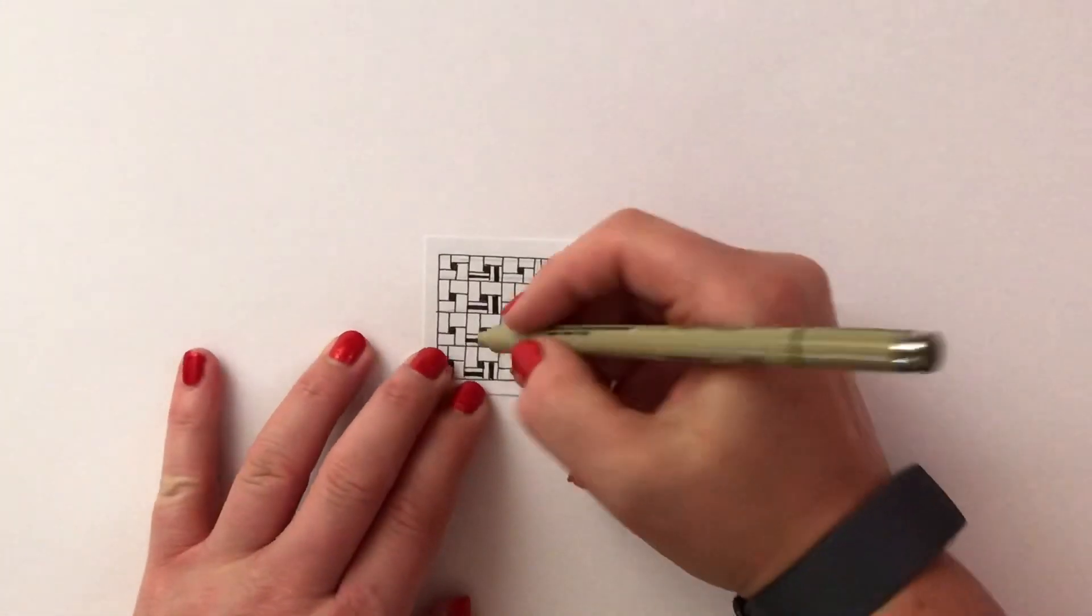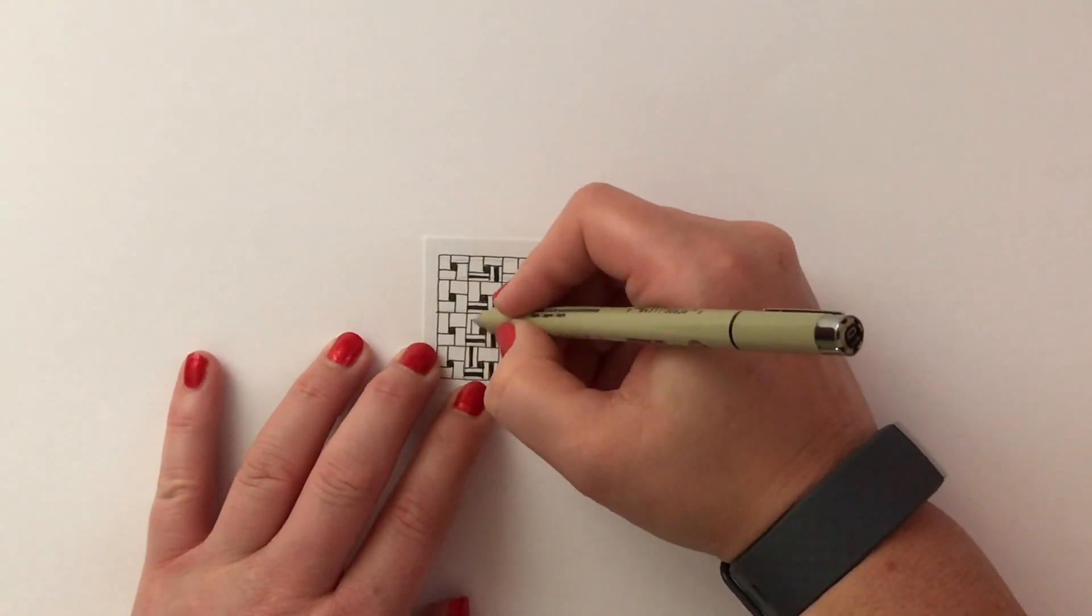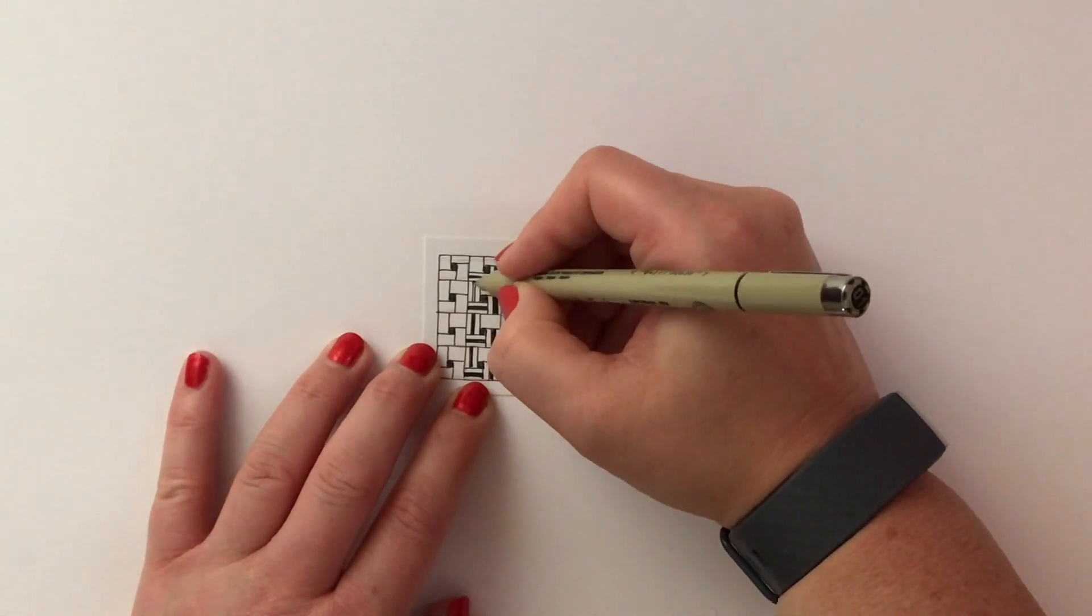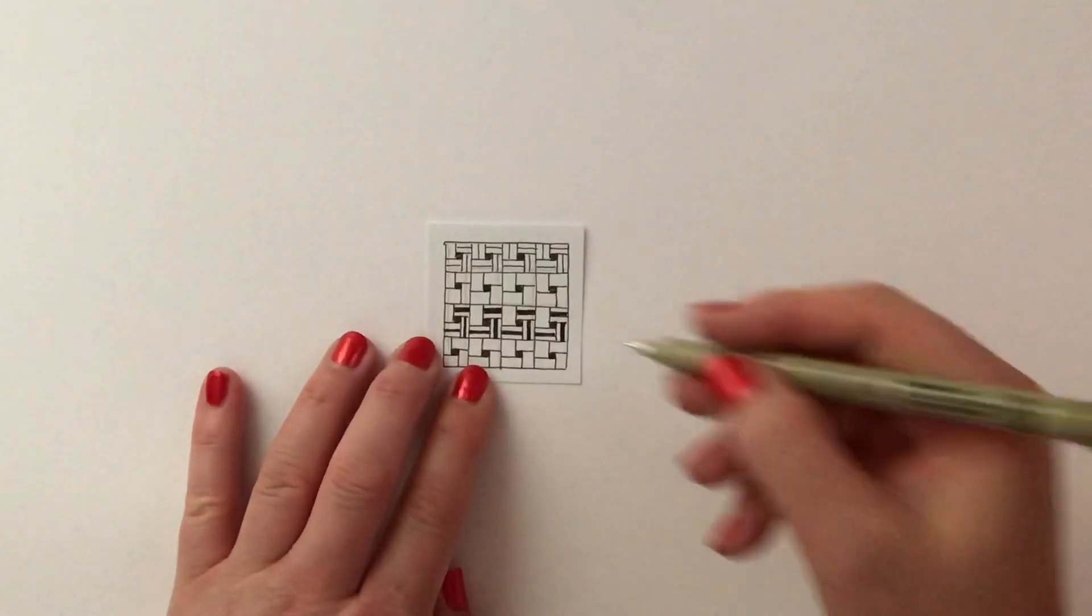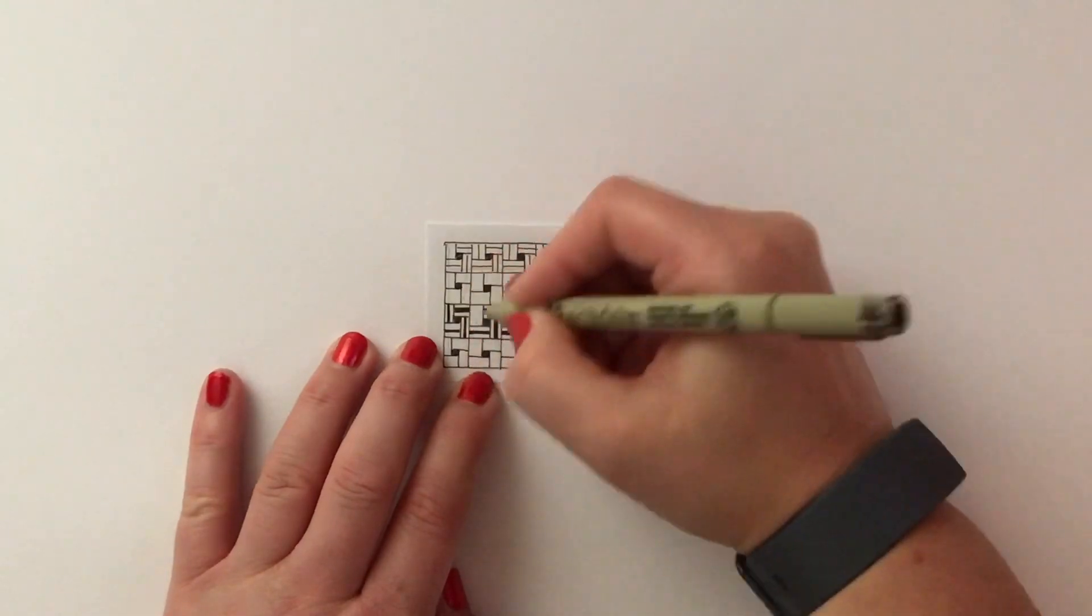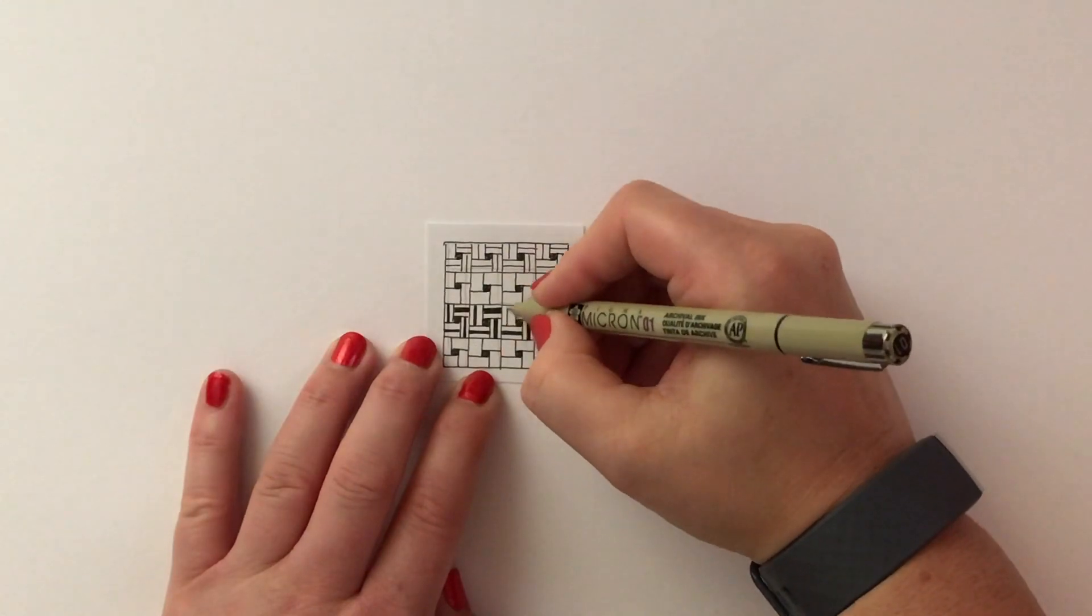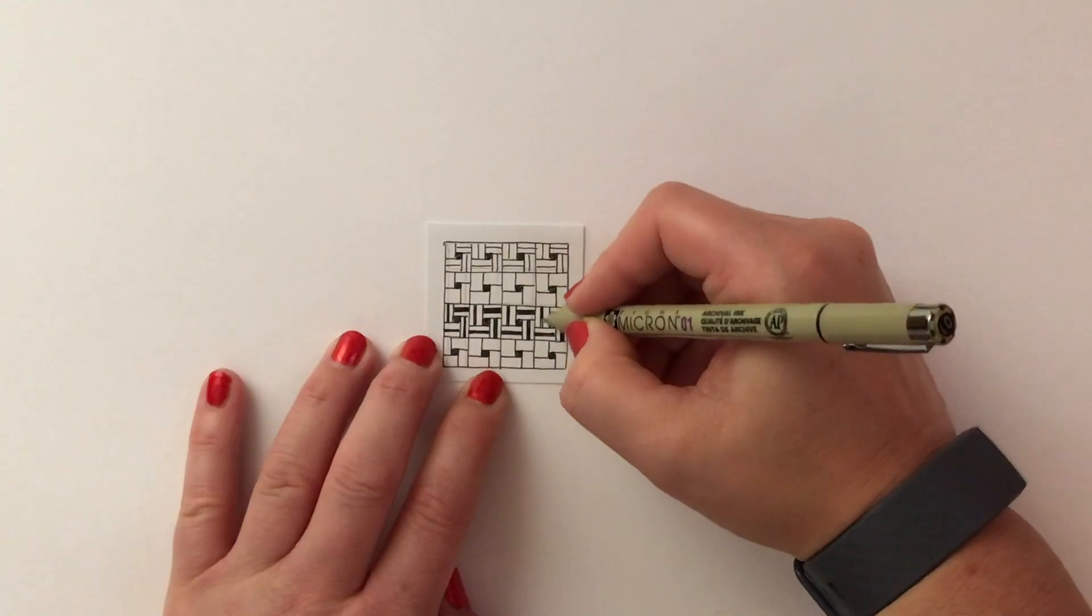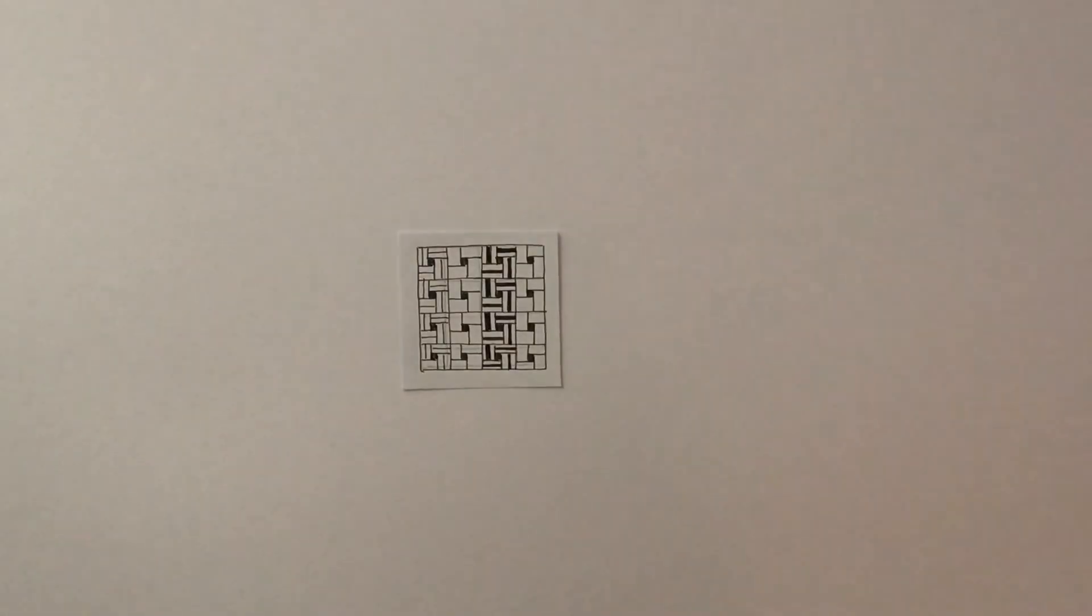This is where you see that this row, the squares aren't wide enough so I'm just going to finish this bit. Then I'm going to show you if you wanted to add some shading where the best place is to add. Again this is one of those tangles that looks really complex but once you get into it and you understand it it's actually rather easy.